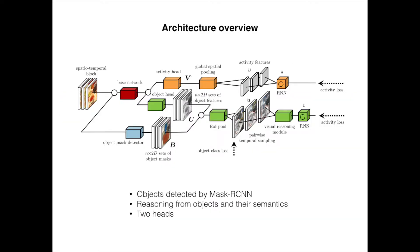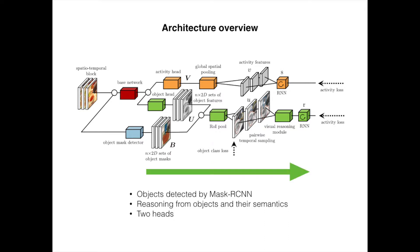We propose relational reasoning on an object level for video classification with a deep neural network including two different heads. The two heads share a base network extracting common features. An activity head extracts global motion and context information. An object head performs visual reasoning from detected object instances in space and time.